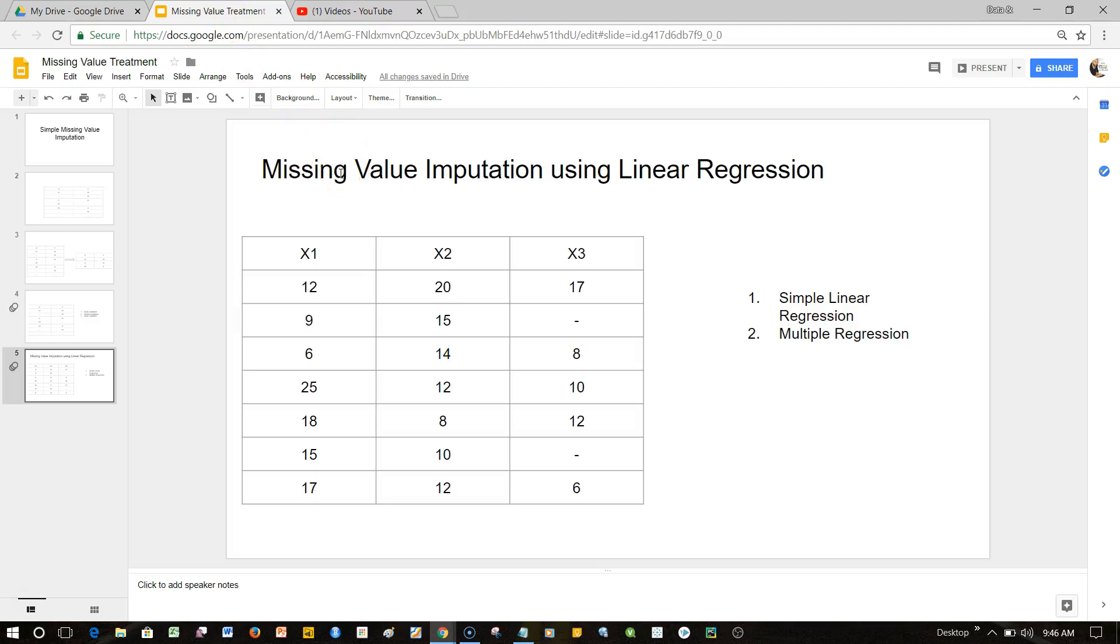What I want to talk about is how you would really utilize the linear regression methodology to impute missing values. What we have over here is X1, X2, and X3 as our three variables. Within those variables, for X1 and X2 if you see, they are fully available.